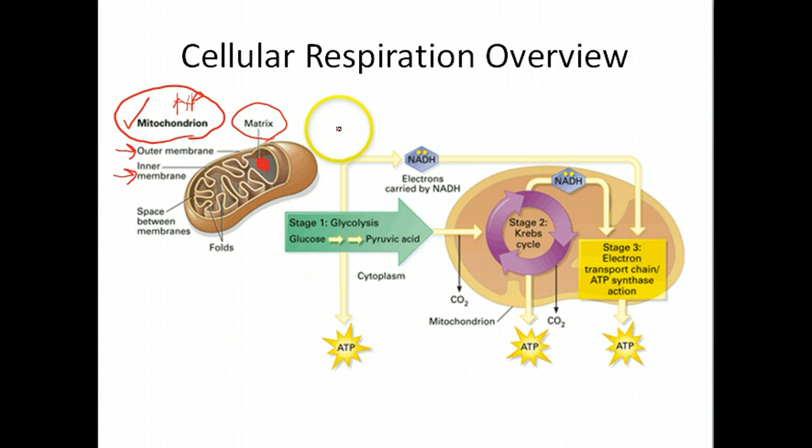Keep those structures in mind. They'll be important later on, mostly just so that we can distinguish the different places that the three parts of cell respiration occurs. So there's three different stages of cell respiration. Cell respiration has three parts or stages. The first is glycolysis, stage one is glycolysis.